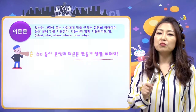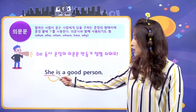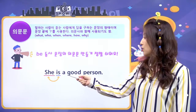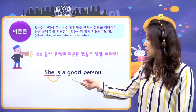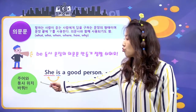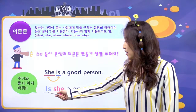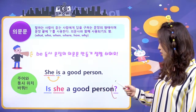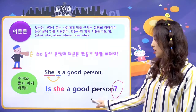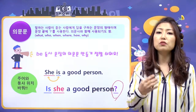비동사 문장은 의문문 만드는 게 정말 쉬워요. 예를 들어 'She is a good person'이라는 문장, '그녀는 좋은 사람이야'가 있는데, 주어와 동사 위치를 바꿔주면 돼요. 바꿔보면 'Is she a good person?' 하고 끝에 물음표 붙이면 비동사 문장의 의문문은 이게 끝이에요. 주어와 동사의 위치를 바꾸기만 하면 의문문이 됩니다.